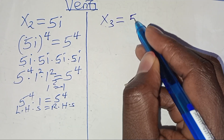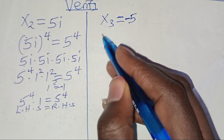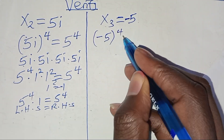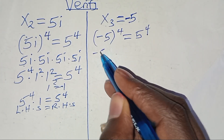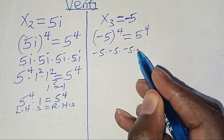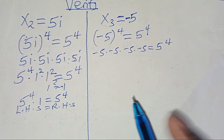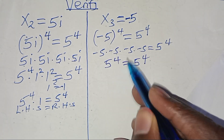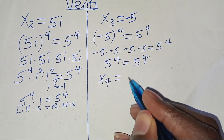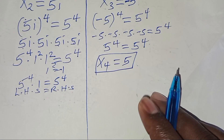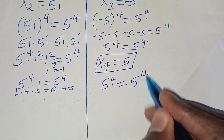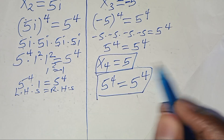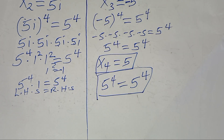For x₃ equals negative 5: negative 5 to the power 4 is negative 5 times negative 5 times negative 5 times negative 5, which gives 5 to the power 4, confirming x₃ satisfies the equation. For x₄ equals 5: 5 to the power 4 equals 5 to the power 4, which clearly shows x₄ satisfies the equation. All four solutions satisfy the equation. Please like and subscribe — see you in the next video!